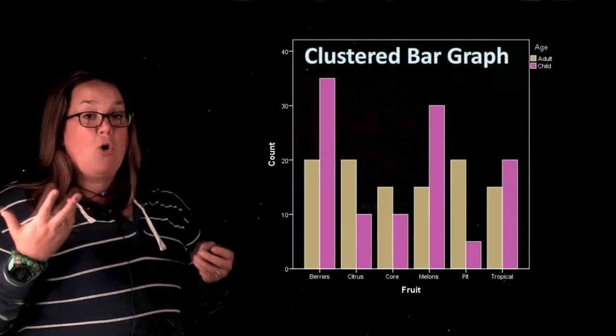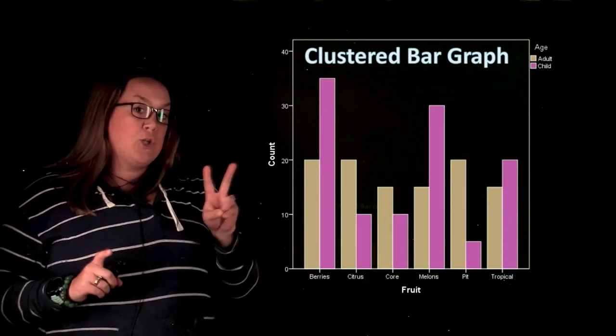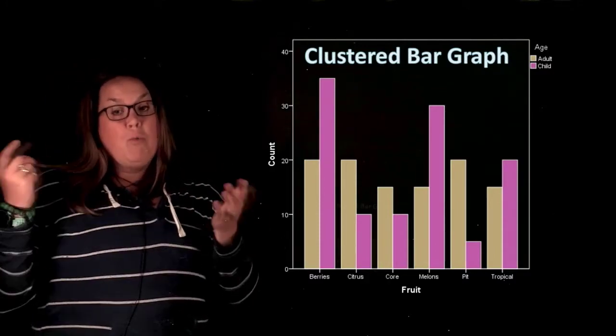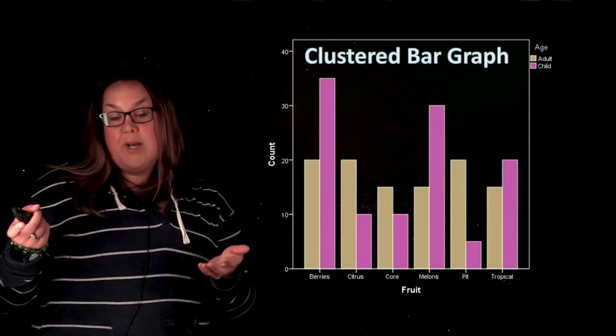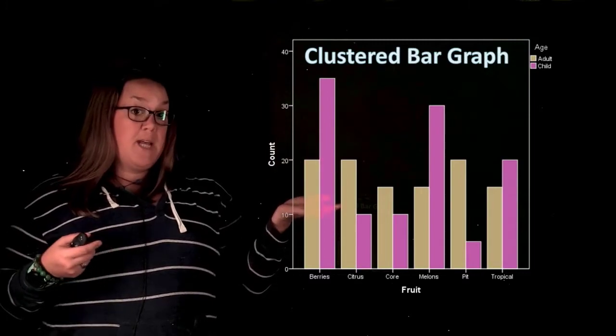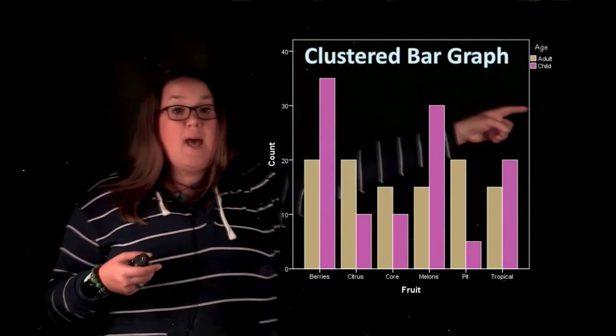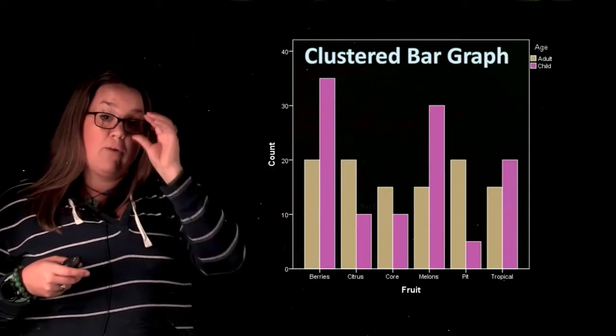So here is our bar graph. It's called a clustered bar graph because if you'll notice, it actually is displaying two variables. Now in previous videos we looked at a contingency table or a two-way table for nicest fruit and age group. That's the same data that's being represented here. You can see that I have a legend and that's the second of my categorical variables.